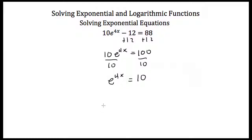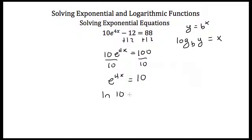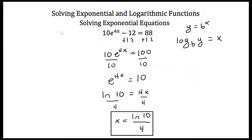Now my variable is still in my exponent. The easiest way to get the variable out of the exponent is to rewrite this exponential equation as a logarithm. If y equals b to the x power, then the log base b of y equals x. Since my base is e, I can say the natural log of 10 is equal to 4x. Dividing both sides by 4 gives x equals the natural log of 10 over 4.